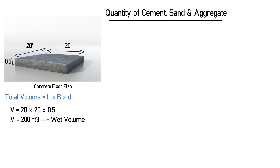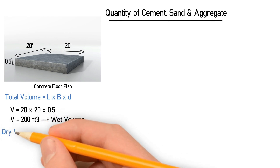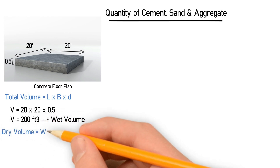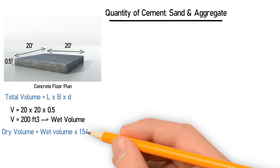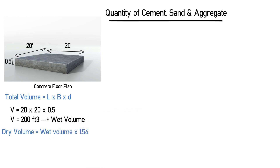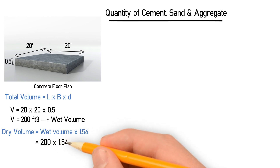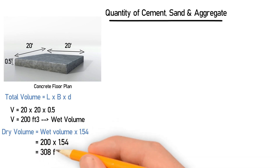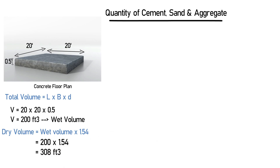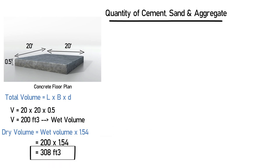Let's convert this wet volume into dry volume. The dry volume is equal to the wet volume multiplied by 1.54, so this becomes 200 × 1.54 = 308 cubic feet. This is the dry volume we have calculated.